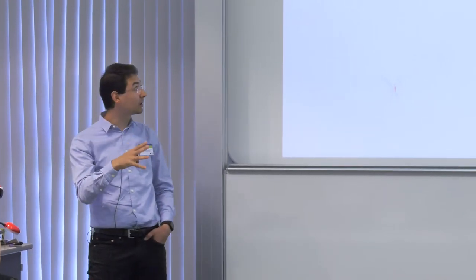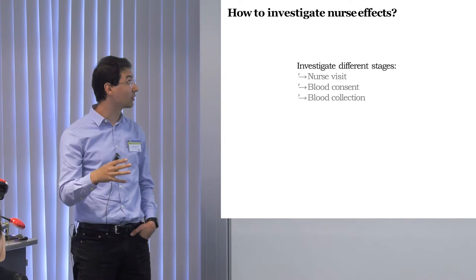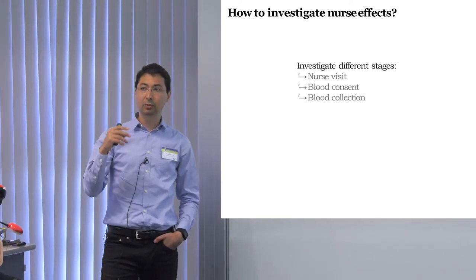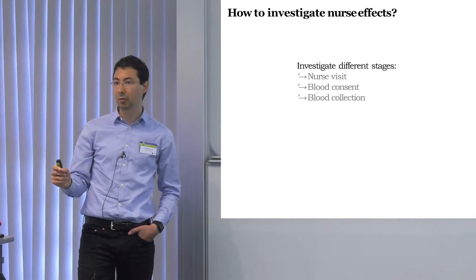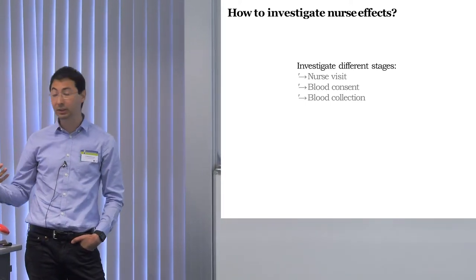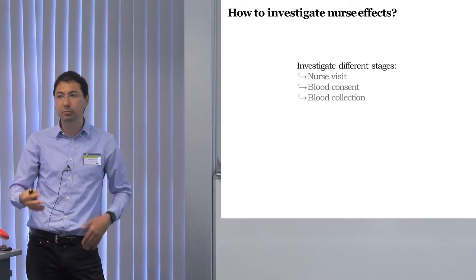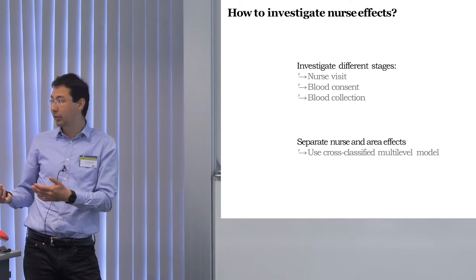To look at this, I separate the three stages — the nurse visit, blood consent, and blood collection — because the mechanisms for missingness might be different. For example, for the nurse visit and convincing somebody to participate, you might have non-contact, which might be related to whether people are working or not, or the kind of jobs they have.